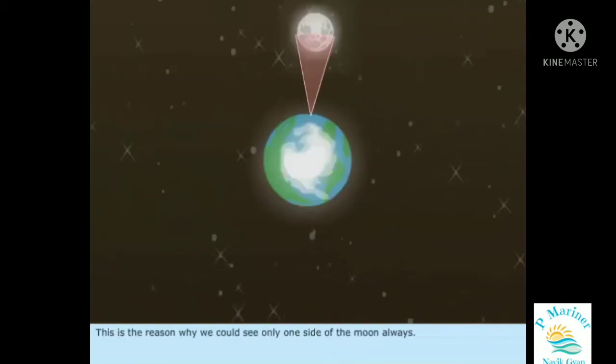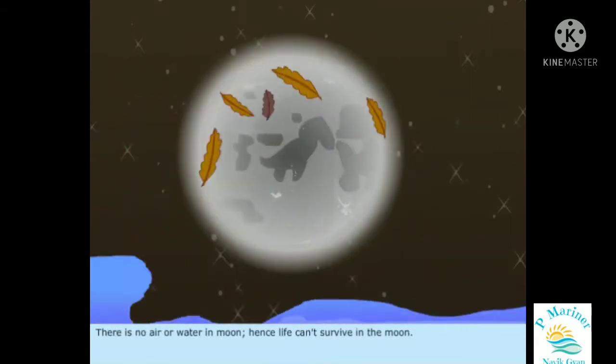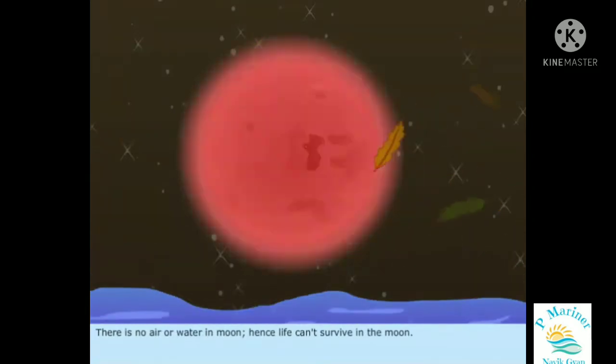This is the reason why we can see only one side of the Moon always. There is no air or water on the Moon. Hence, life cannot survive on the Moon.